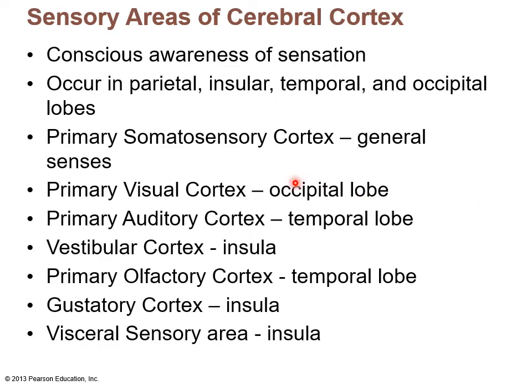Sensory areas are spread across large regions of the brain. The primary somatosensory cortex in the parietal lobe processes general senses — information coming in through the skin — and can determine where on the body a sensation is coming from. The primary visual cortex is in the occipital lobe, and the auditory cortex is in the temporal lobe.